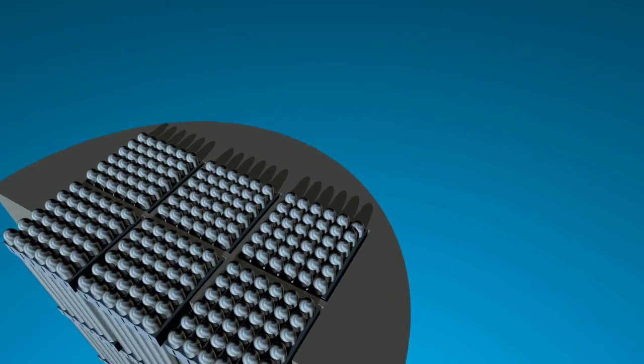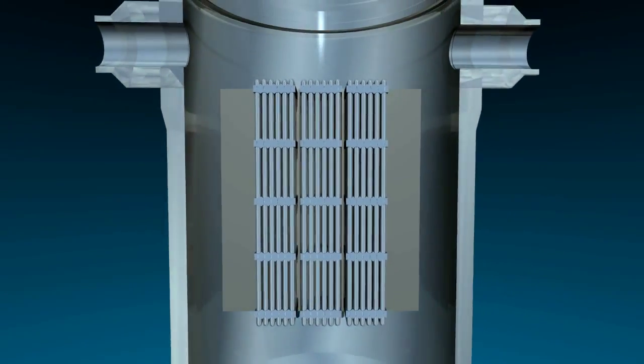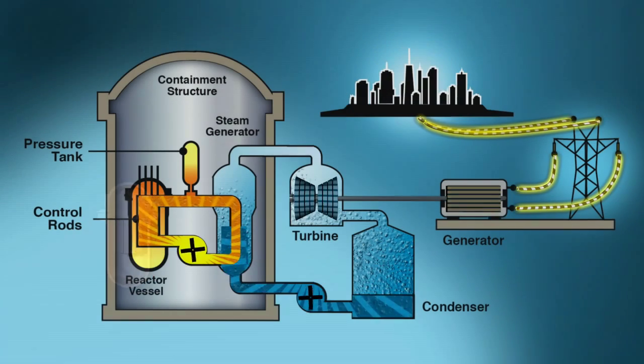Rod assemblies are carefully positioned inside a nuclear power reactor core, where controlled fission reactions heat water to generate electricity.